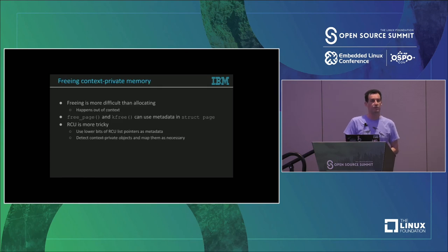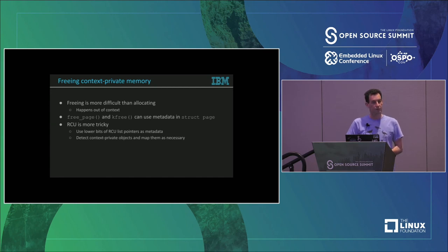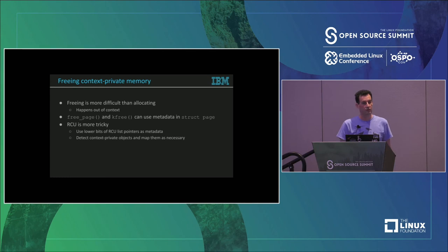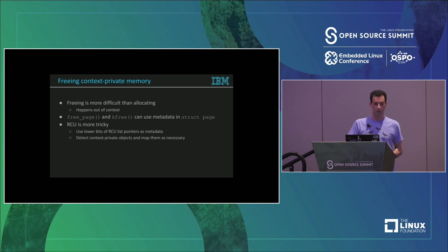Freeing memory that is restricted to a particular context is more difficult than allocating it. For instance, things like RCU and softirq queues run in entirely different contexts than the one that allocated the memory. So we need some metadata to detect from the freed address what context and what cache the memory should be freed to.